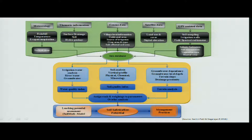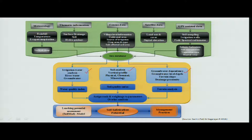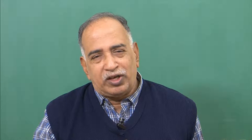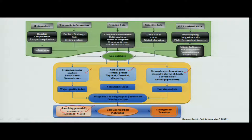To study soil salinity, we first identify meteorological and thematic conditions. Then we create a database using GIS, assess irrigation water quality, conduct soil analysis both vertically and horizontally, and test groundwater quality and dependency. We also perform a salt leaching potential assessment — to determine how much water is needed to flush out a given amount of salt from a particular location.